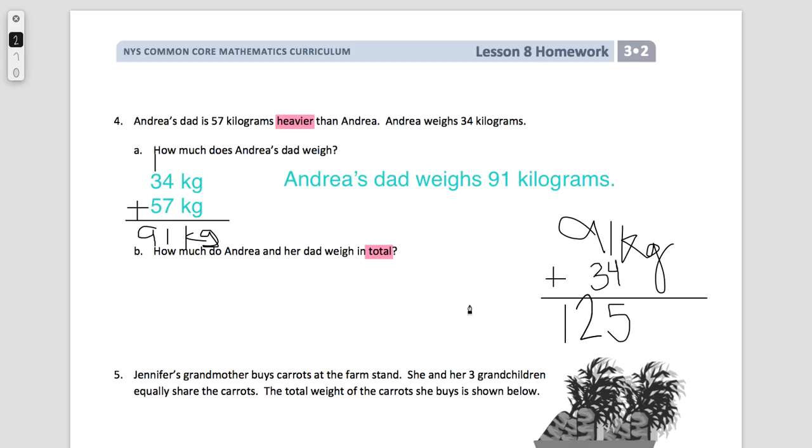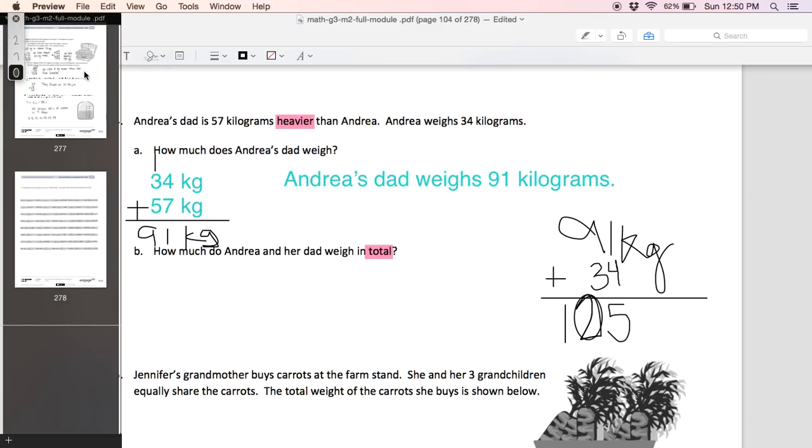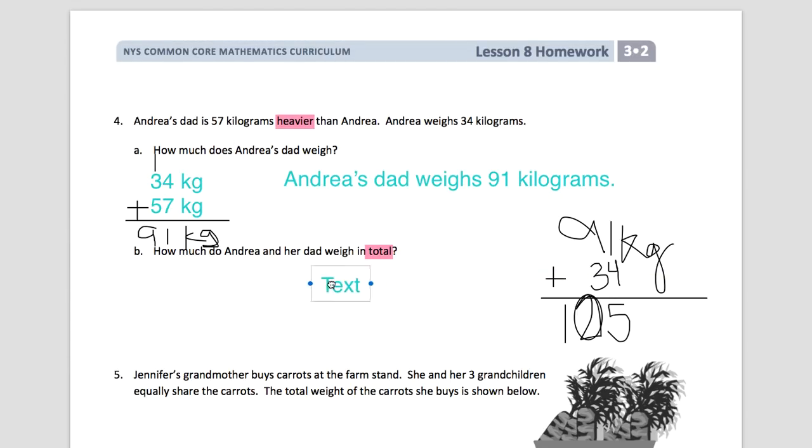So they together weigh 125 kilograms. So we're going to write this as a sentence. Andrea and her dad weigh 125 kilograms in total.